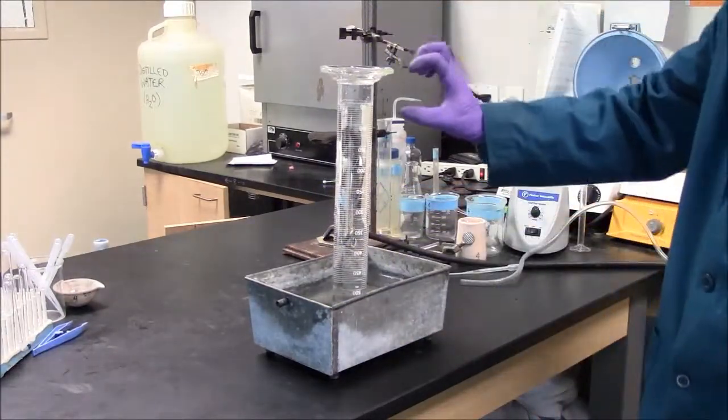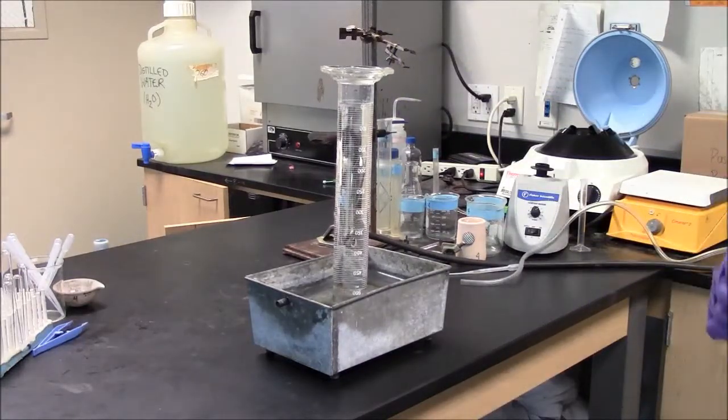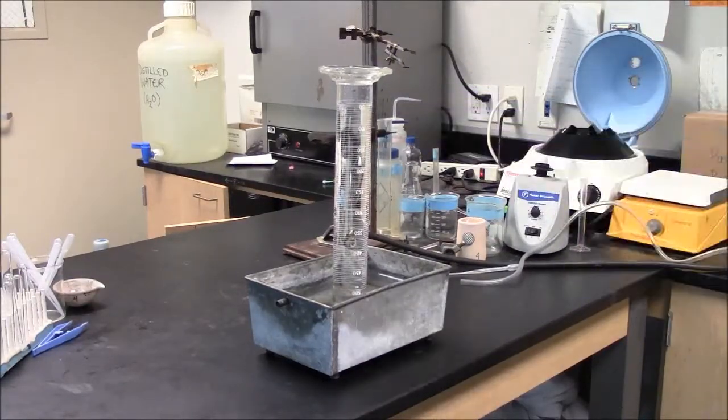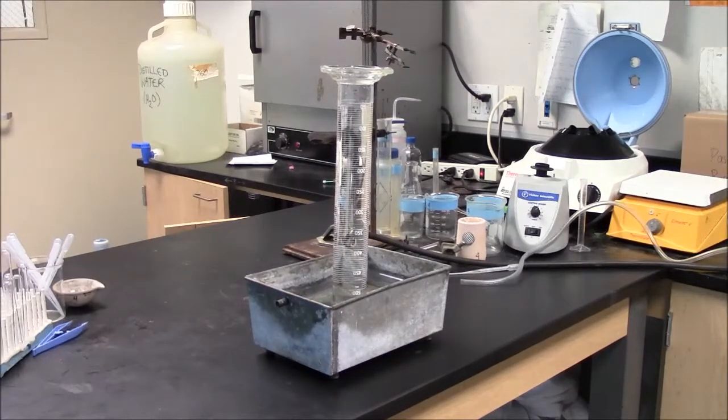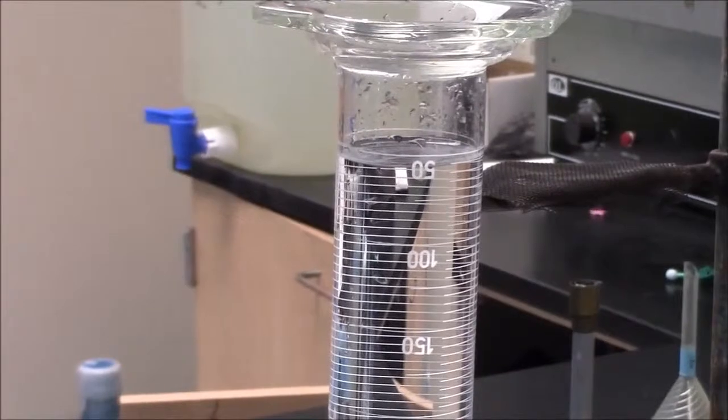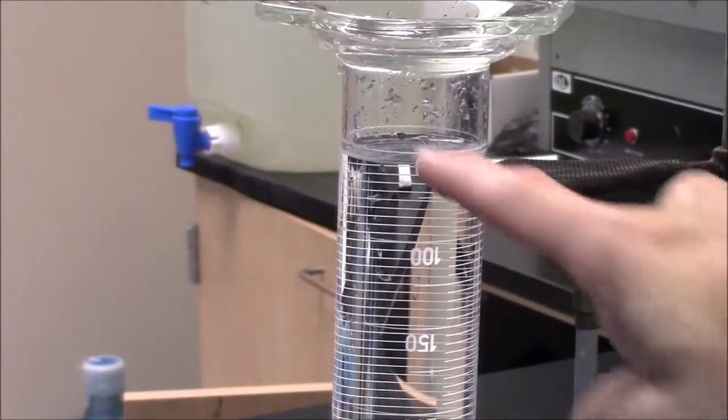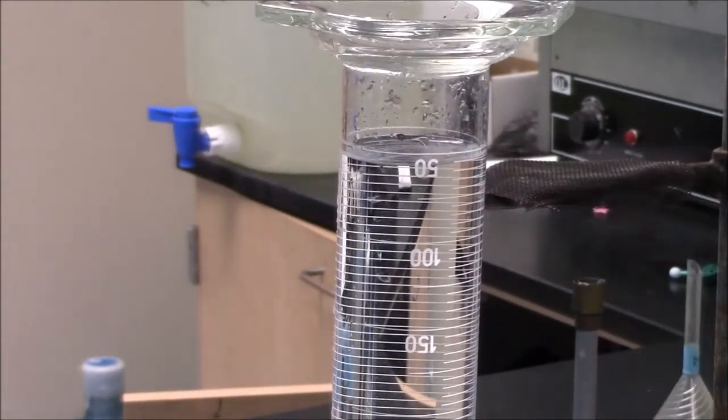I have some air space at the top. It's not a problem as long as I can read the volume of air already in the cylinder. When you read the volume you have to read the bottom of the curve. It's called a meniscus.